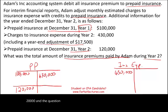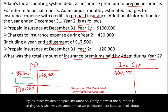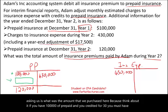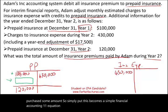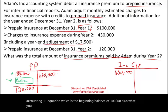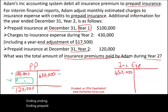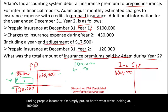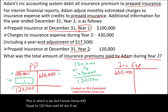The question is: what was the total amount of insurance premium paid? Remember, every time we buy insurance, we debit prepaid insurance. This becomes a simple financial accounting 101 equation: beginning balance of $100,000, plus what you purchased, minus what you used, should equal your ending prepaid insurance balance. So: $100,000 plus X minus $430,000 equals $120,000. Solving for X gives us $450,000. The answer is $450,000.